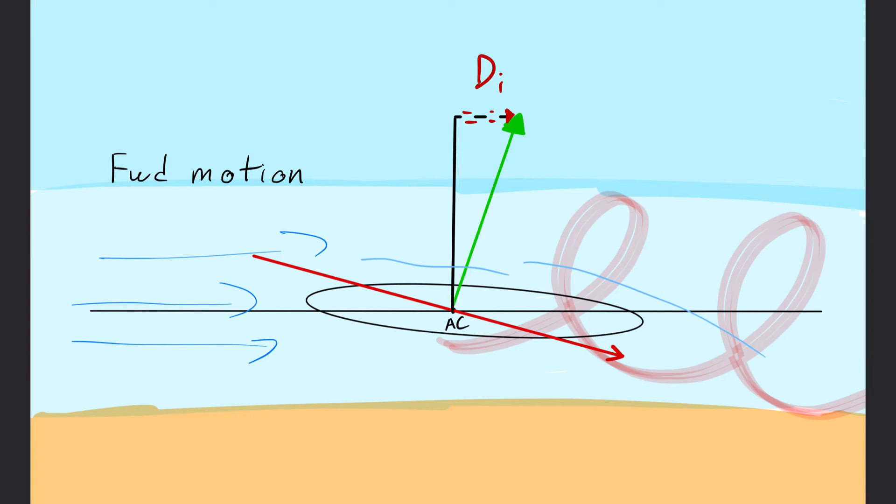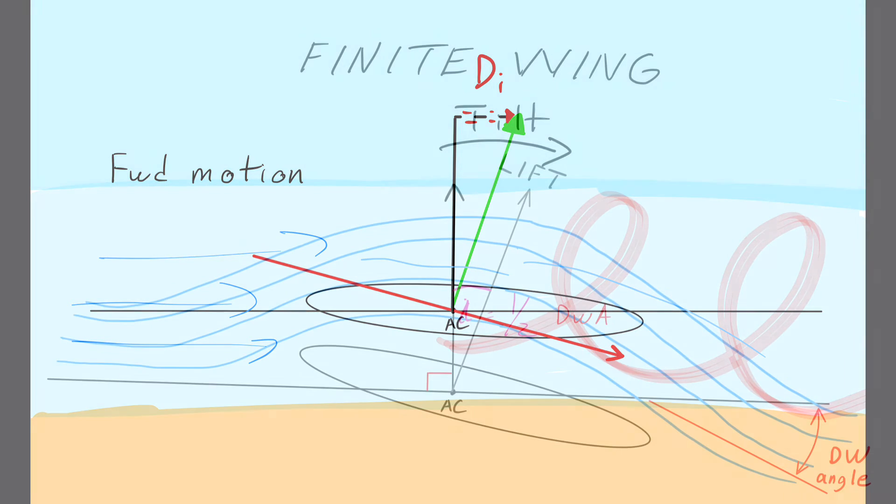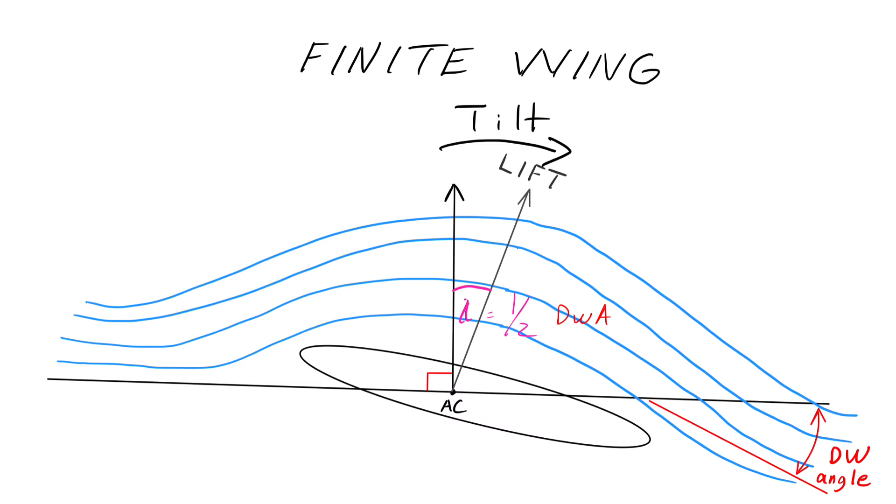You can see in this exaggerated illustration, a negative angle of attack actually causes the green lift vector to tilt backwards. Lift is perpendicular to the average relative wind.